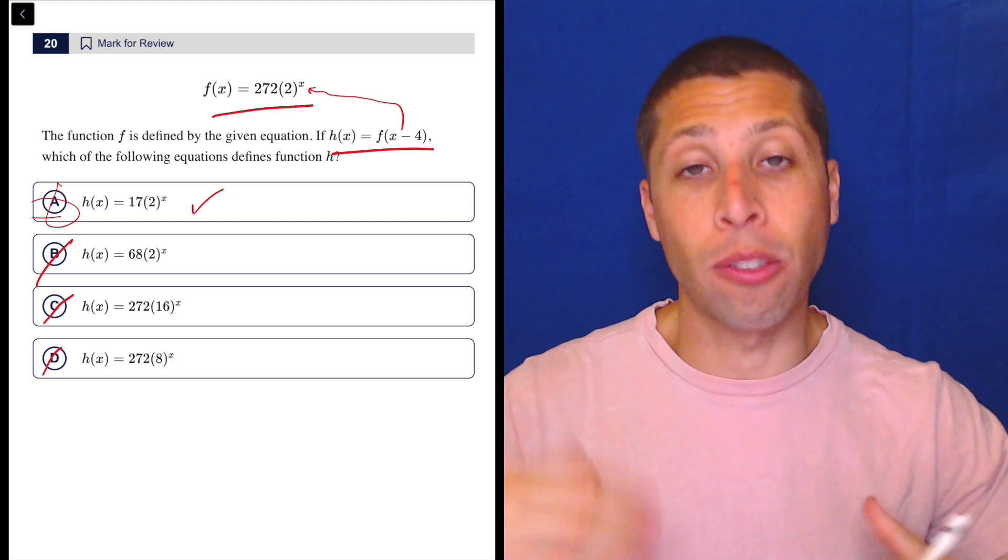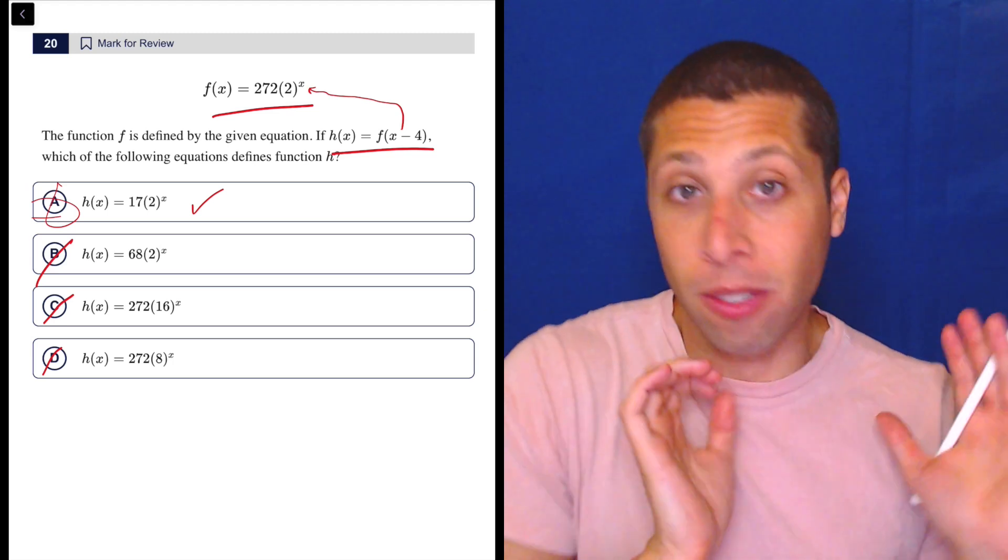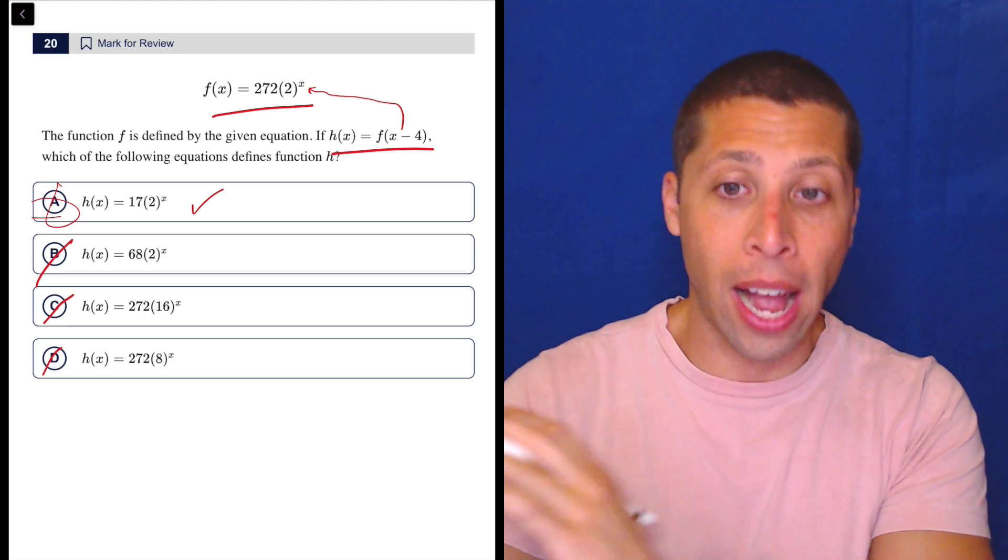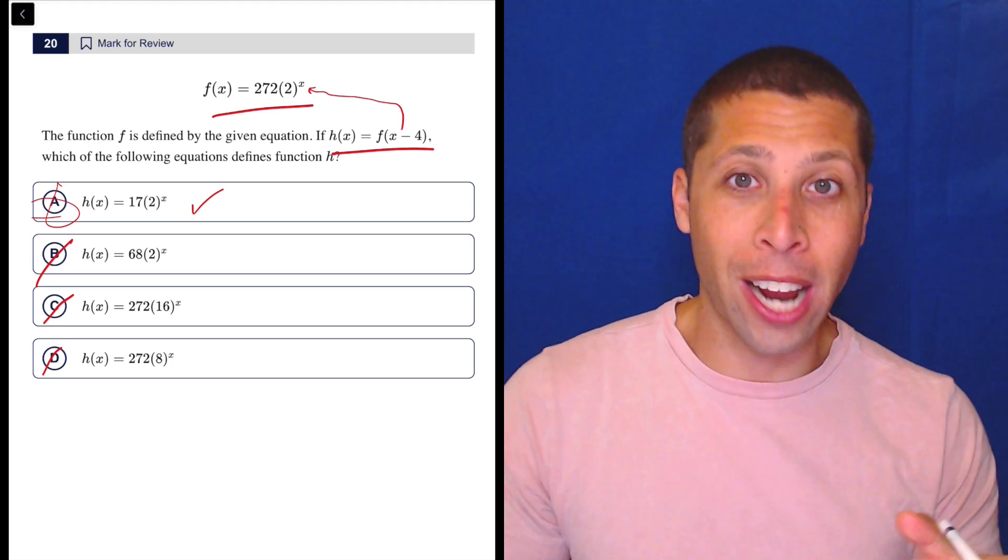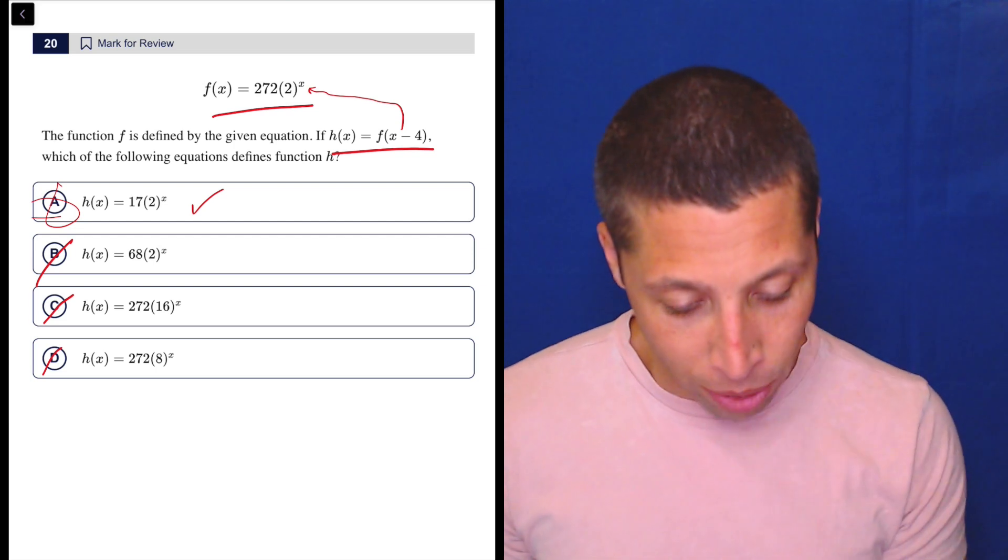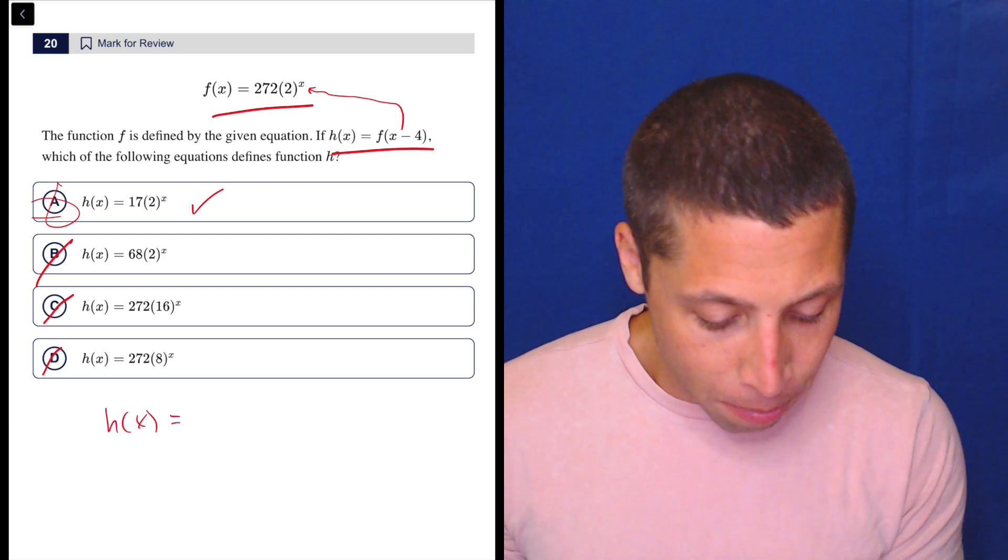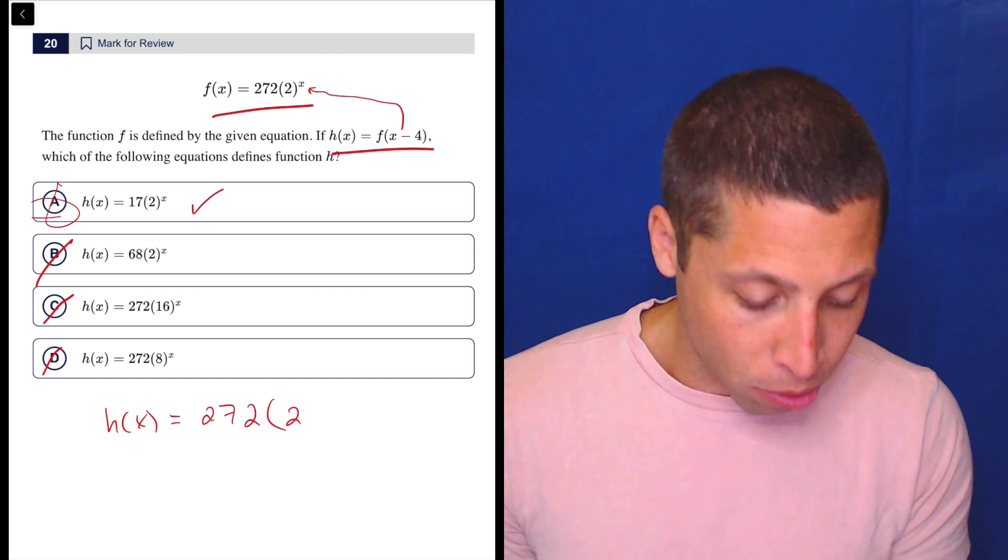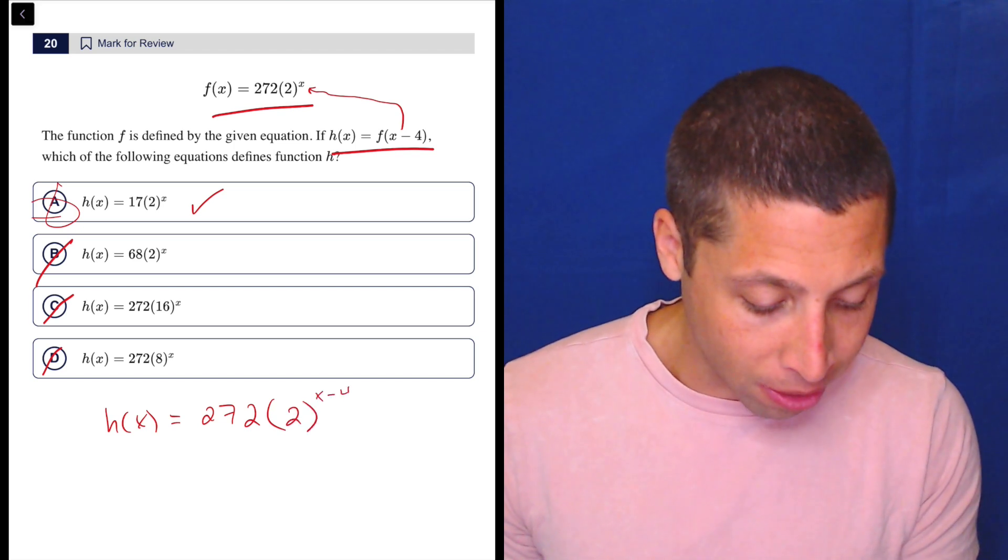Basically, any time we have something in parentheses for this function notation stuff, it just means follow the instruction. That is what goes in for x. So, normally, x went in for x in f of x, now it's x minus 4. So, h of x is going to be 272 times 2 to the x minus 4.